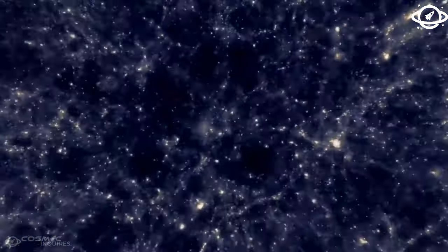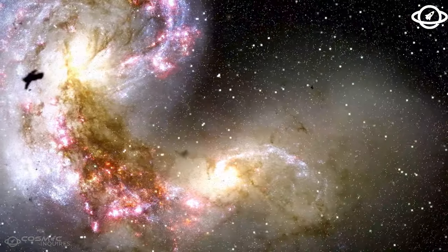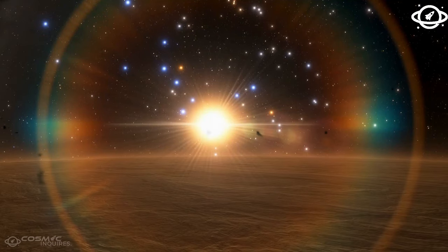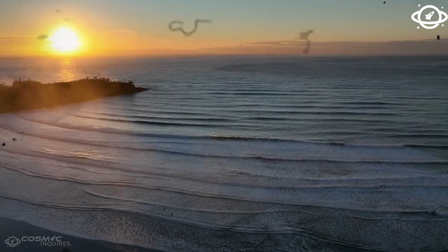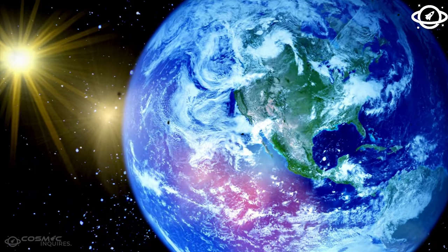James Webb reveals a hidden dust veil near a supermassive black hole. Black holes are considered cosmic omnivores, gigantic machines of destruction that wipe out everything in their path. Yet, this is only half the truth.